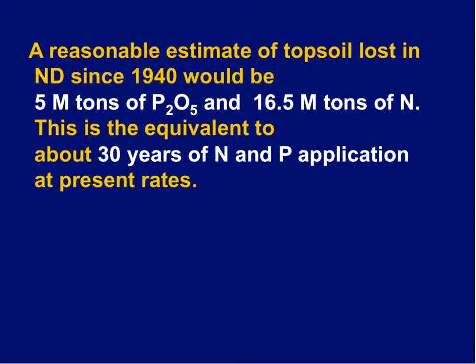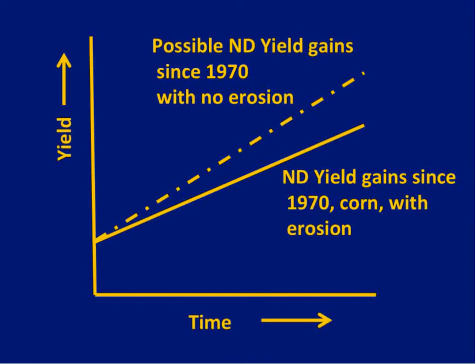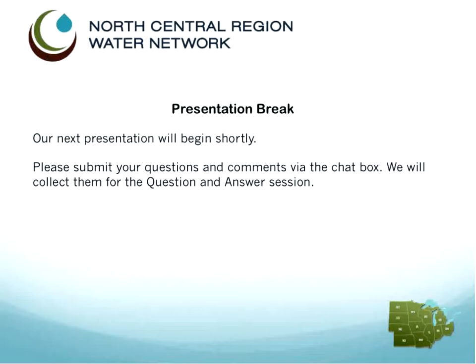Since 1940 we've lost another 5 million tons of phosphate and significant nitrogen from topsoil loss — another 30 years of nutrient loss at present rates. Farmers say yields have increased in corn and wheat over the years, and that's true, but one has to wonder what yields would have been if we'd been able to tap into that topsoil. The gains made over the past 40 years could have been much greater had we retained that soil health and productivity.